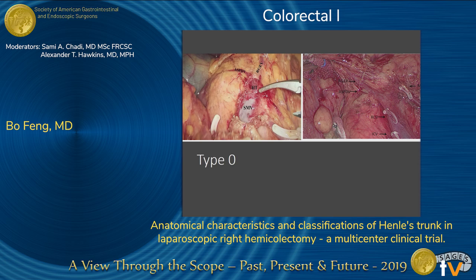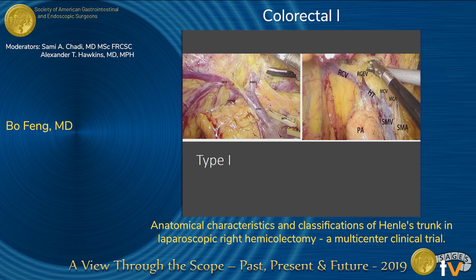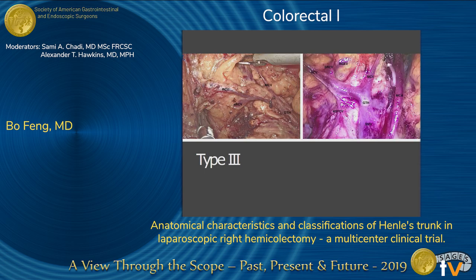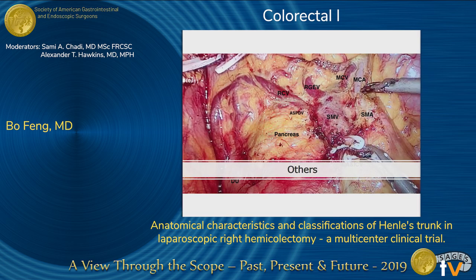This is a different subtype proportion according to different subtypes. Type 0 means there are no veins originally from the colon. Type 1 means just one vein — either ICV, MCV, or SRCV from the colon. Type 2 means at least two veins originally from the colon. Type 3 means three vessels from the colon. This is a very interesting case that I will show in the video.